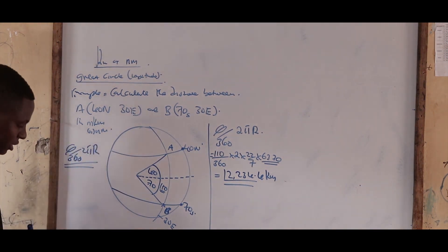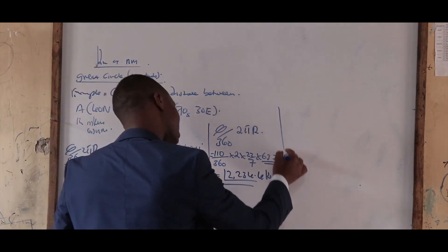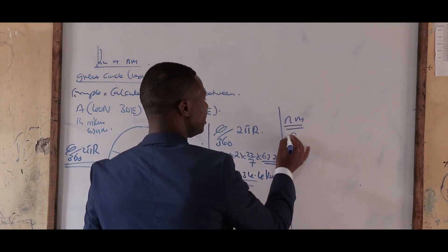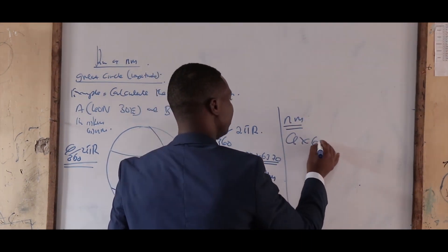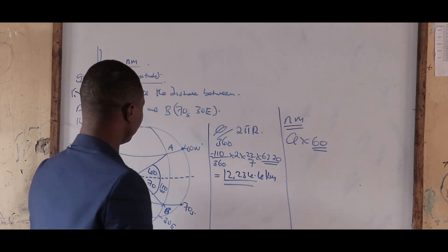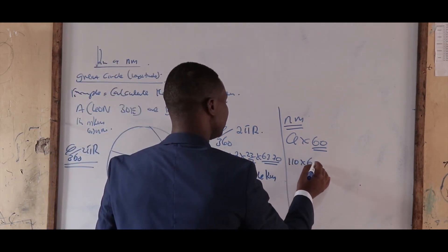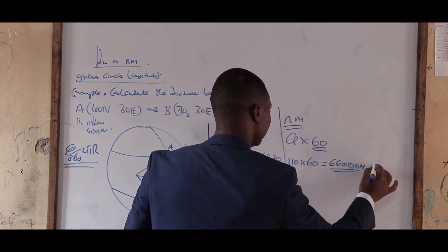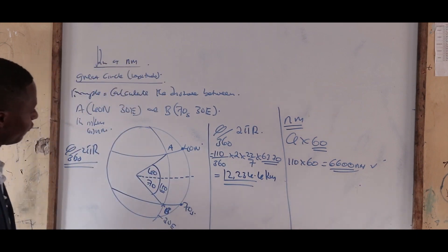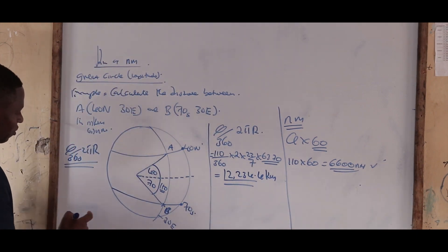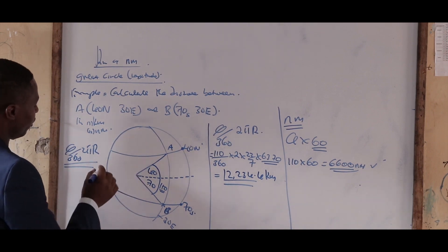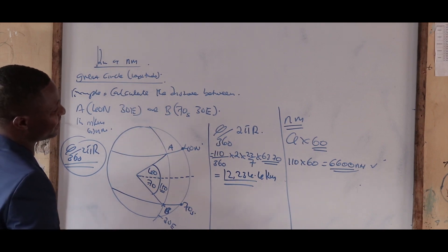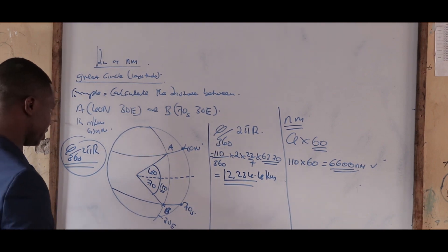That is how you get distance in kilometers along a great circle — the formula is theta over 360 times 2 pi r. If asked for nautical miles, the formula is theta times 60, where 60 is a constant. In this case: 110 times 60 gives 6,600 nautical miles.